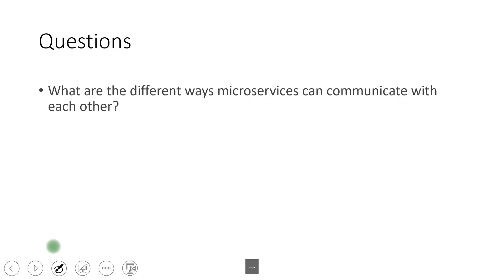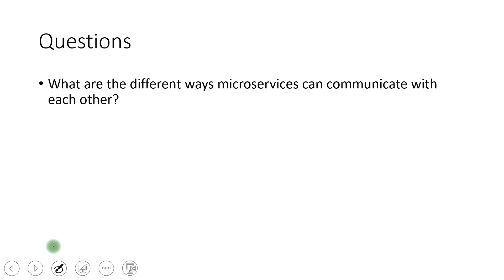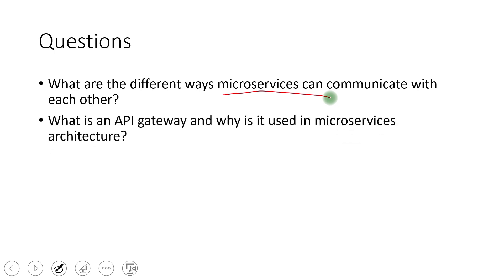The first question is: what are the different ways microservices communicate with each other? We have seen synchronous and asynchronous communication. We can go deep into that and explain it. The second question is: what is API Gateway and why is it used in microservices architectures? If you see the previous video, you will learn a lot about the API Gateway and load balancer and how they help in effective microservices communication.